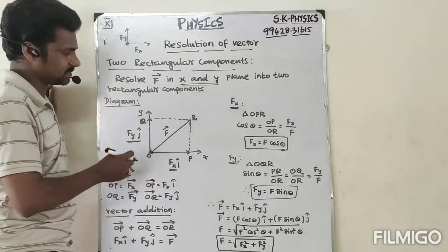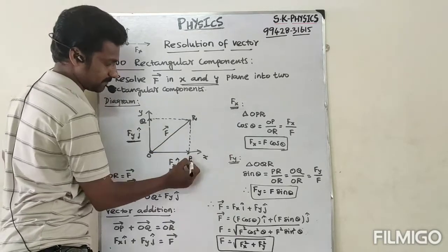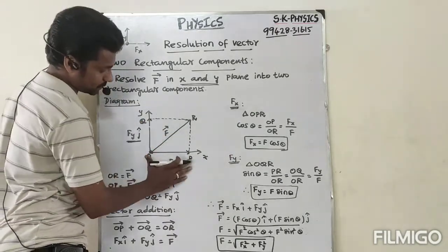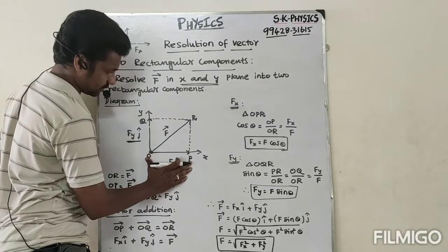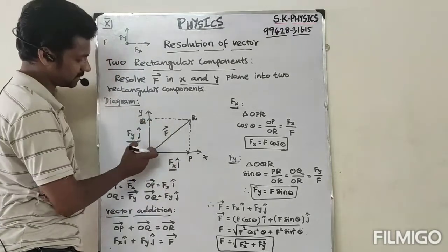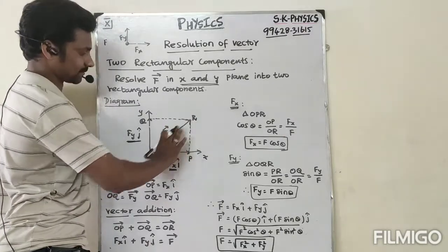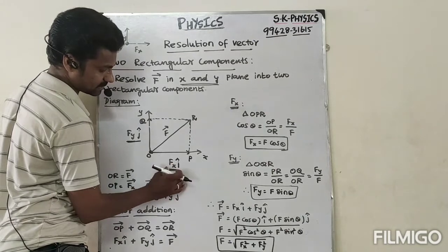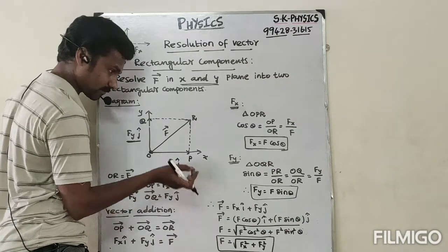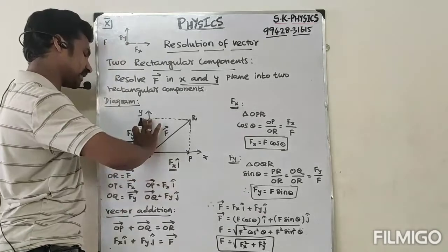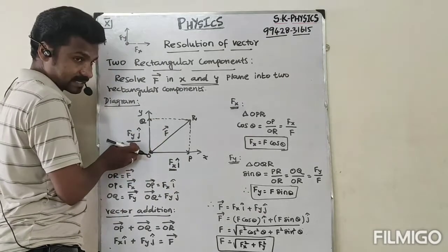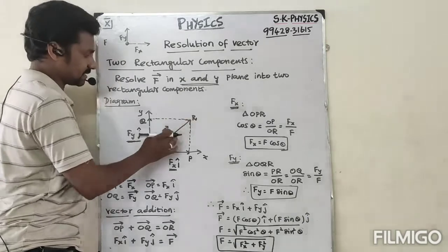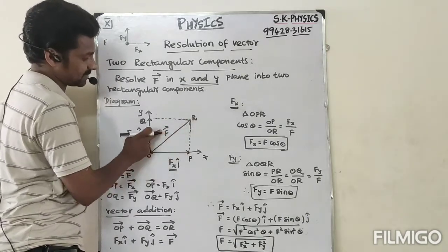Consider a vector going from O to some point — that is the OP vector. Similarly there is an OQ vector. The resultant of these is the OR vector. So OP vector equals Fx i-cap, OQ vector equals Fy j-cap, and the resultant OR vector equals F vector.